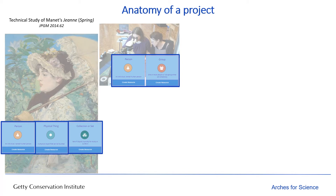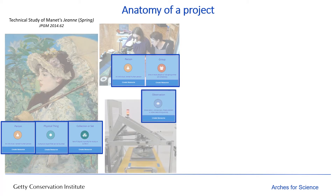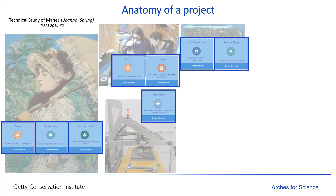When we did our technical examination, we did a particular series of experiments using specific scientific equipment and made observations about the object under study. So the concept of an examination observation also becomes part of our project. We also took a few small samples from the surface to better understand the painting's material, which is of course common in a technical study, and the resulting samples then become physical things in their own right, just like the painting. In this case, we also create data around the process or the sampling activity by which they were removed.